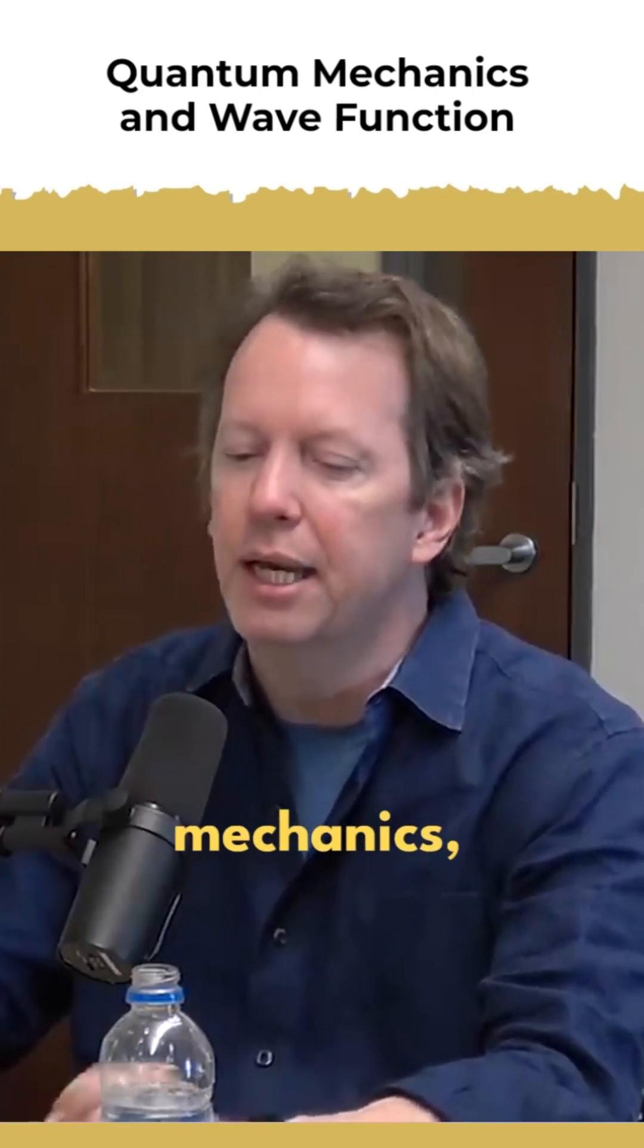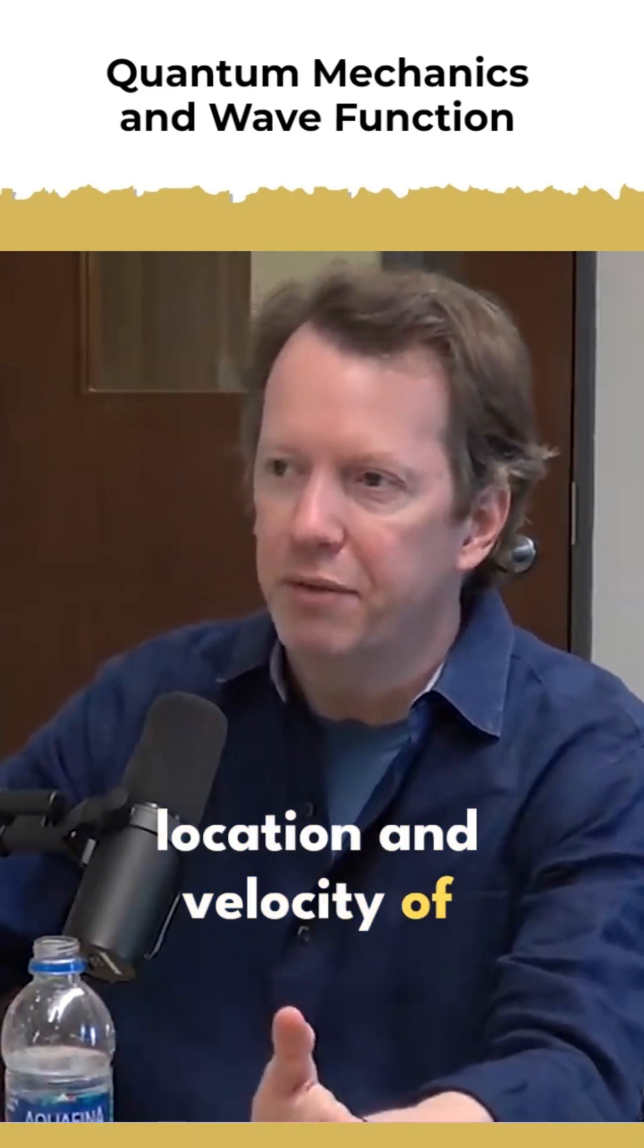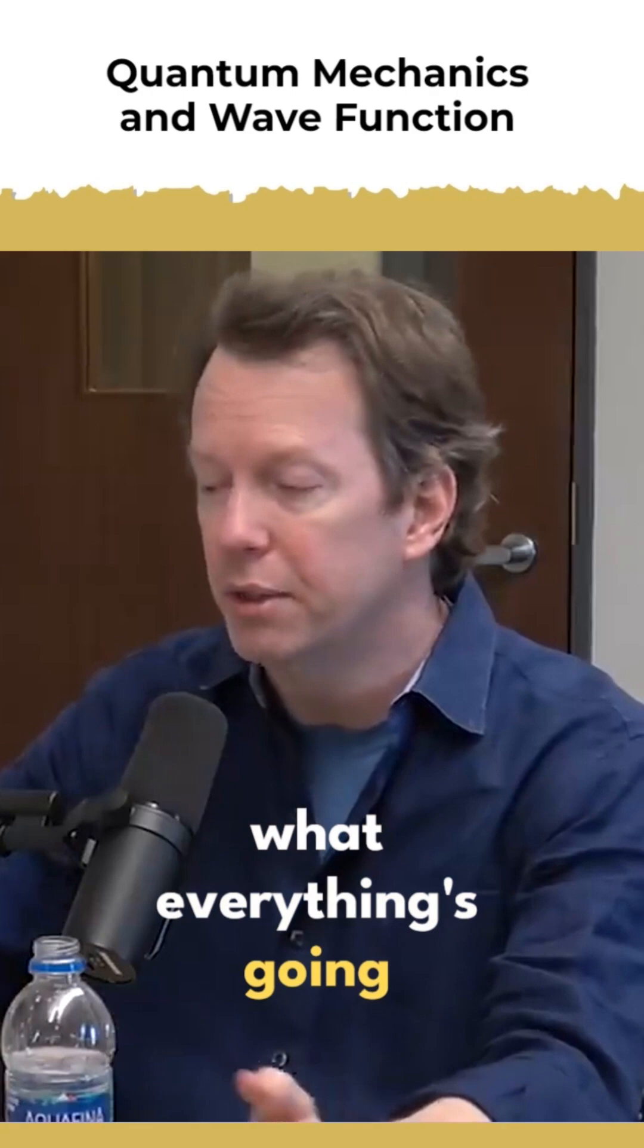So in classical mechanics, you have an object, it has a location, has a velocity. And if you know the location and velocity of everything in the world, you can say what everything's going to do.